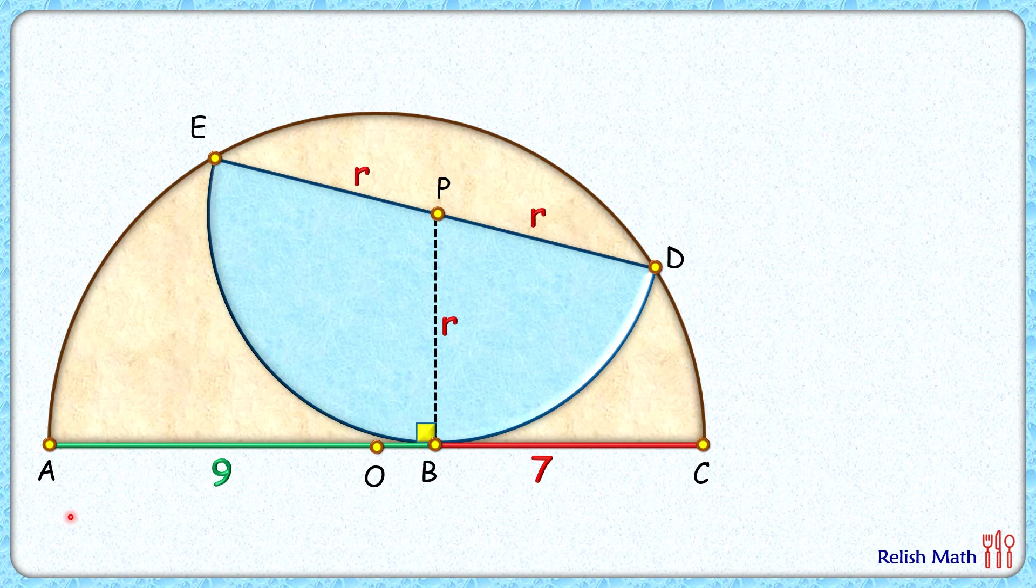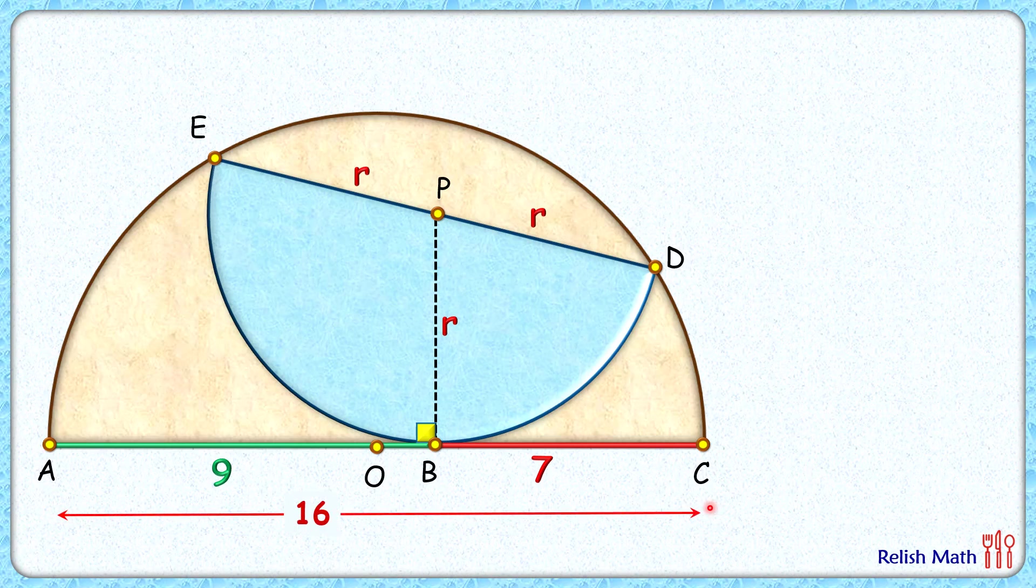The diameter of this brown semicircle is 16 centimeters, and thus the radius is 8 centimeters. So AO length is 8 centimeters. How about OB length? OB length will be 9 minus 8, or 1 centimeter. Let's join P and O here, the centers of two semicircles.